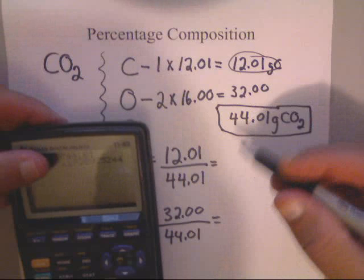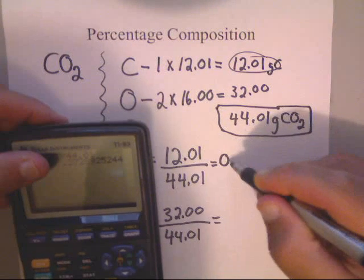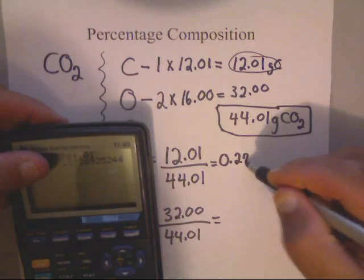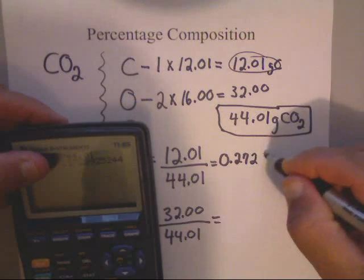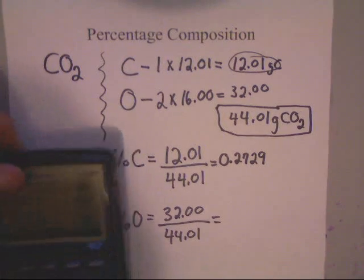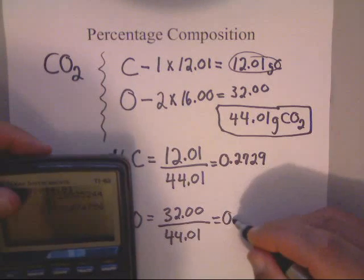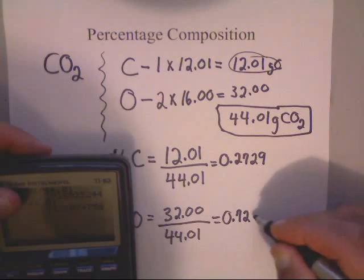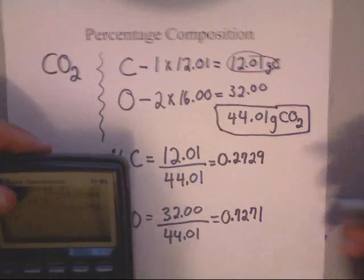is 0.2729. Come down here and do this math: 32 divided by 44.01, and you'll get 0.7271.